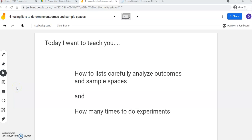Good evening, favorite 7th graders. I want to work on two things today that I've seen cause some problems in the last couple days. They are as follows. I want to teach you today how to use lists to carefully analyze outcomes and sample spaces. That's number one, not number two. Good job. And how many times to do experiments. These have both been issues I've seen kind of crop up in class. So I wanted to shore those up a little and teach you a new strategy.